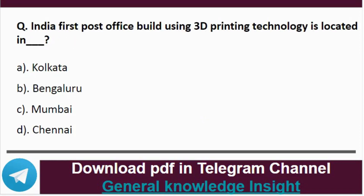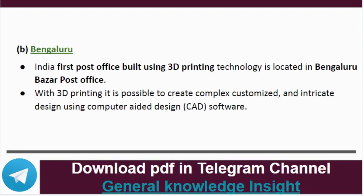Question 2: India's first post office built using 3D printing technology is located where? The correct answer is option B, that is Bangalore. India's first post office built using 3D printing technology is located in Bangalore. At Bazaar Post Office, with 3D printing it is possible to create complex, customized and intricate designs using computer-aided design software.